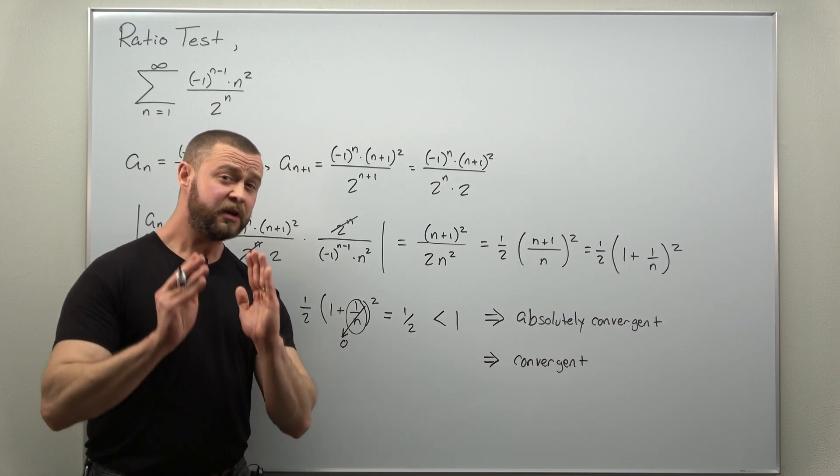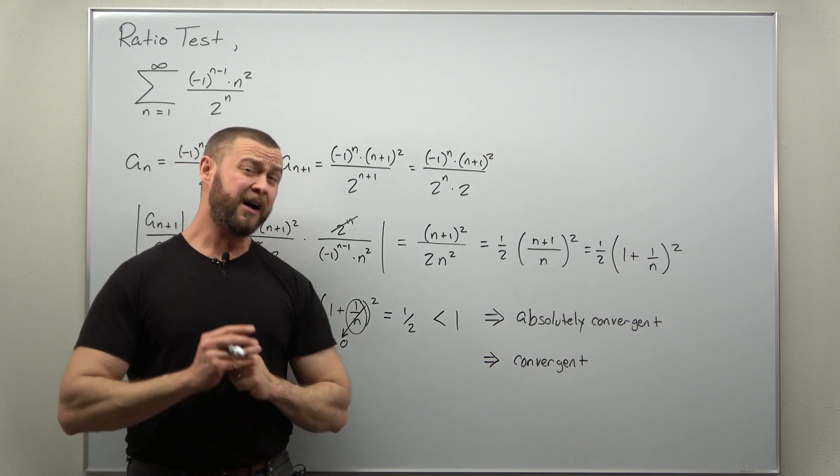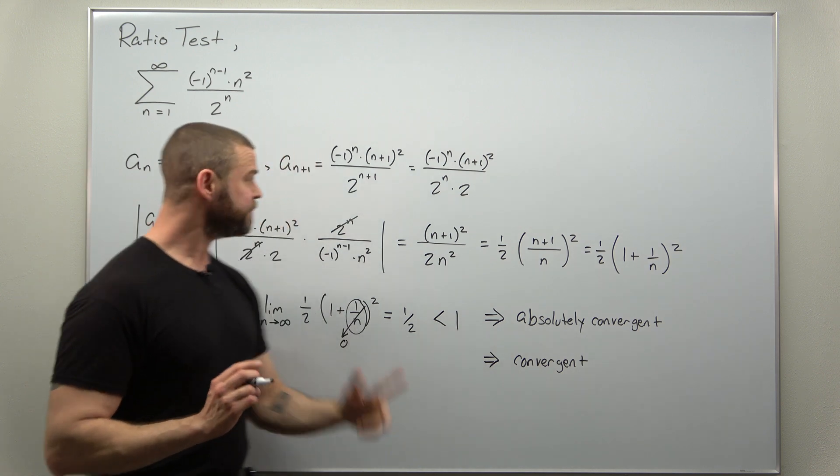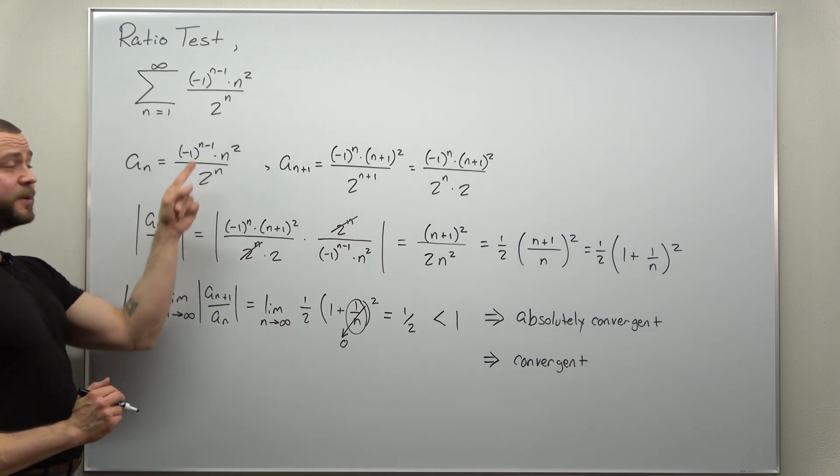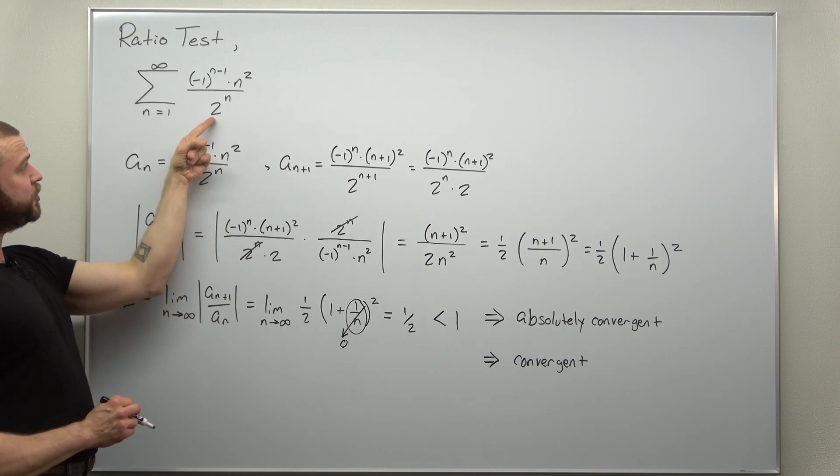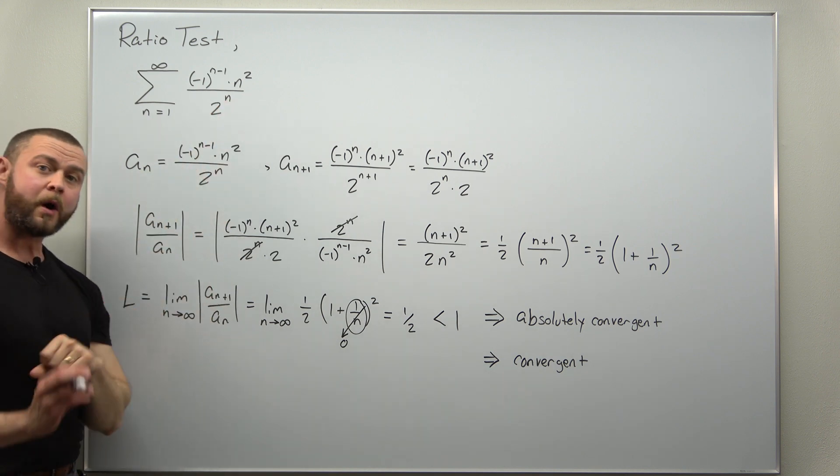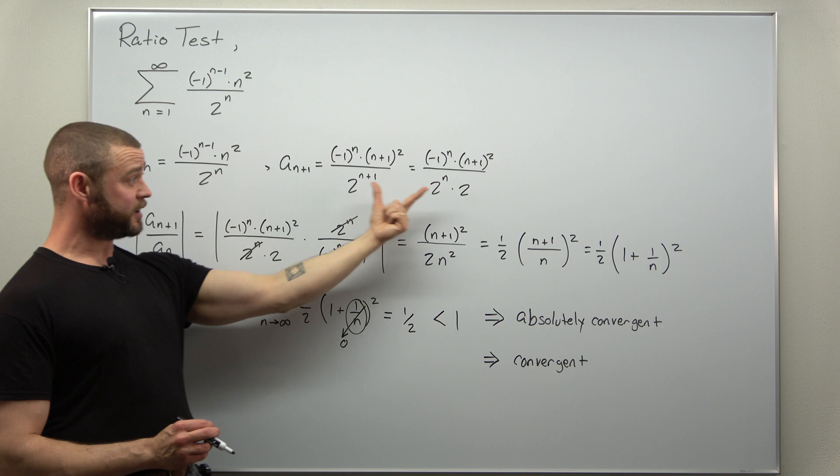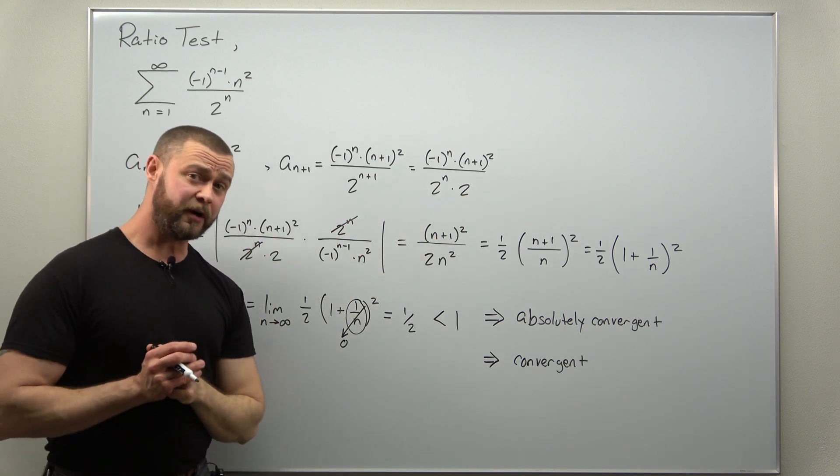And this was a simple, straightforward example of applying the ratio test. Pretty good example in terms of the simplification. We have n to a power, but more importantly, two to an nth power, where we applied our simple exponent trick here, which is going to be incredibly useful.